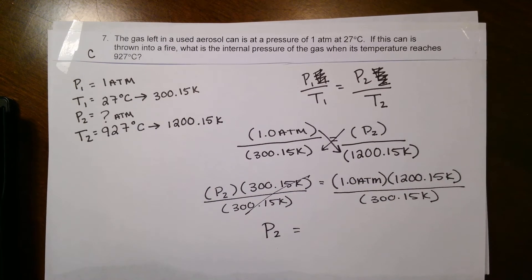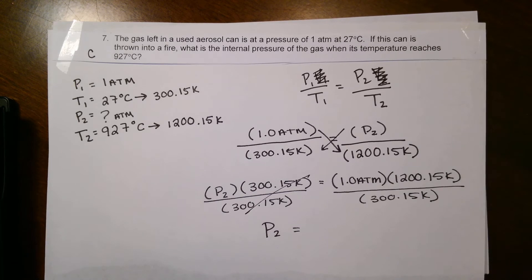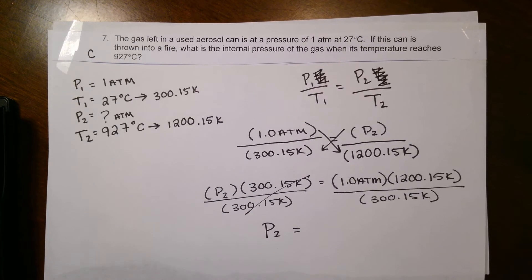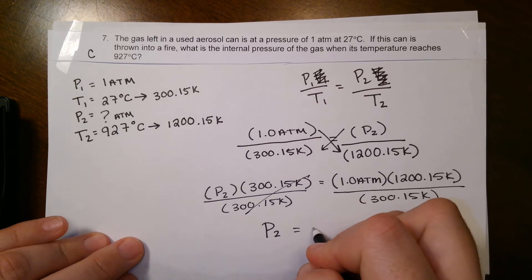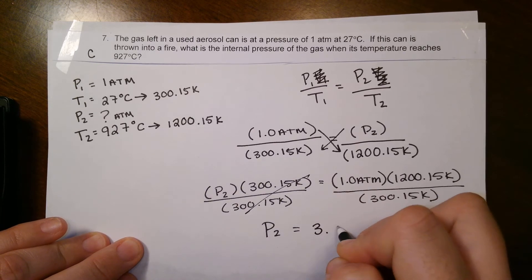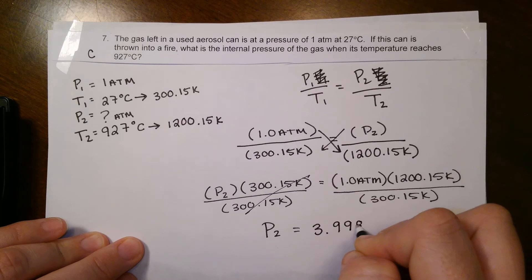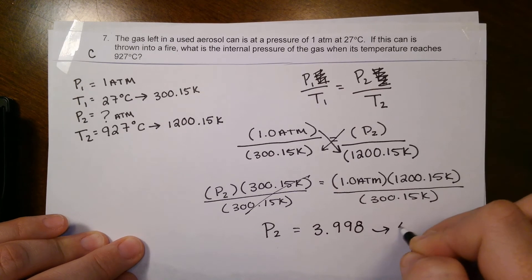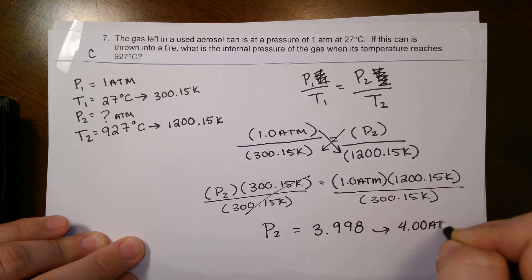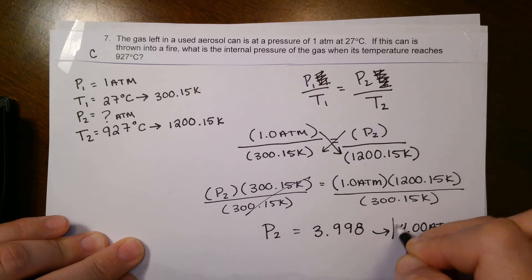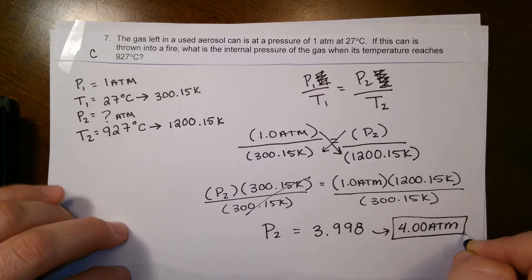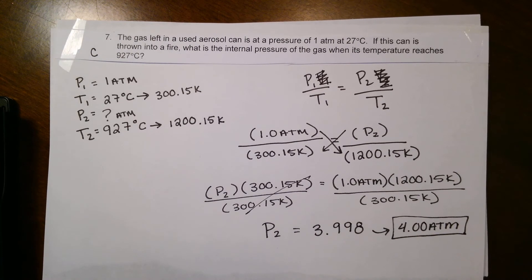So on the other side, we're gonna do 1 times 1200.15 Kelvin divided by 300.15 Kelvin. So we get that the new pressure is 3.998, so we can go ahead and write that as 4.00 atm. Very high pressure. Awesome, thank you.